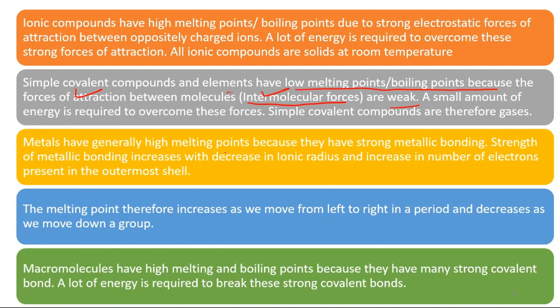Metals have generally high melting points because they have strong metallic bonding. Strength of metallic bonding increases with decrease in ionic radius and increase in number of electrons present in the outermost shell.